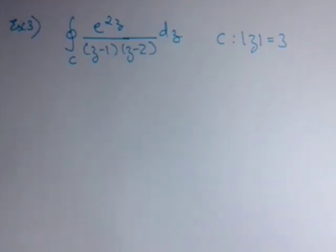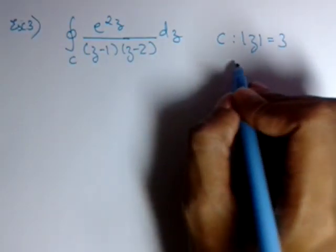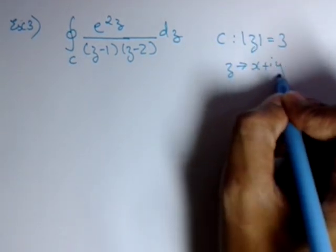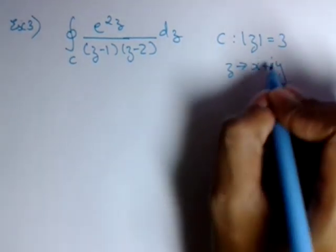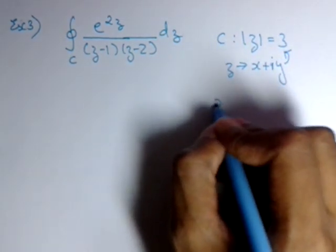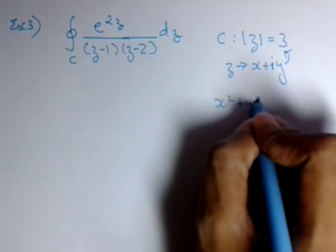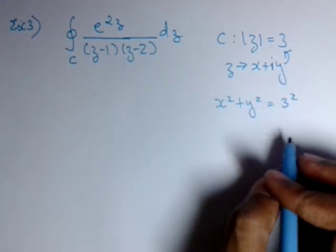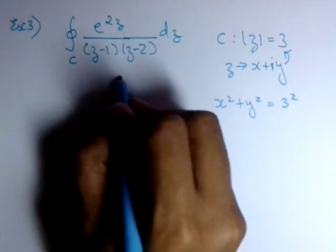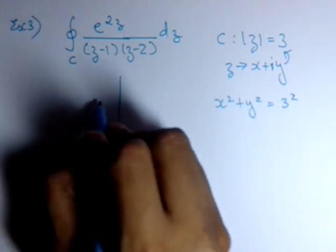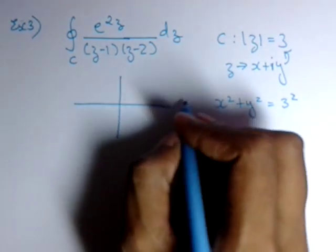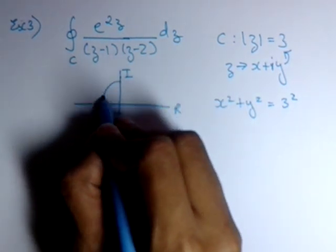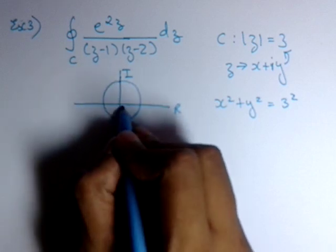So here we can see that putting z as x plus iy in the equation of the contour, we get x squared plus y squared is equal to 3 squared. So this is an equation of the circle.